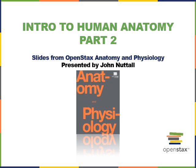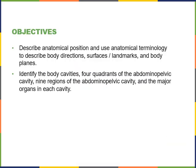This video will cover an introduction to human anatomy, part two. We'll cover the following study objectives: describe anatomical position and use anatomical terminology to describe body directions, surfaces or surface landmarks, and body planes. Identify the body cavities, the four quadrants of the abdominal pelvic cavity, the nine regions of the abdominal pelvic cavity, and the major organs in each cavity.